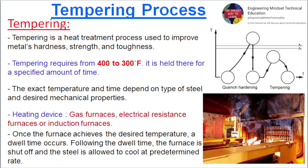Tempering is a heat treatment process used to improve metal's hardness, strength, and toughness. Tempering requires temperatures from 300 to 400°F, held for a specified amount of time. The exact temperature and time depend on the type of steel and desired mechanical properties. Heating devices include gas furnaces, electrical resistance furnaces, or induction furnaces. Once the furnace achieves the desired temperature, a dwell time occurs, following which the furnace is shut off.